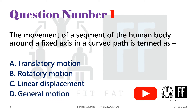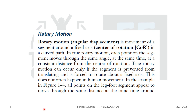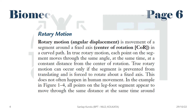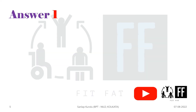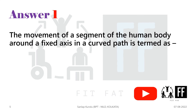This is a straightforward question from biomechanics. Looking at the reference, the definition of rotatory motion is the movement of a segment around a fixed axis, which is the center of rotation, in a curved path. This definition matches exactly what the question asks. This is from the Norkin biomechanics book, page number six. So the answer to question number one is option B, rotatory motion.